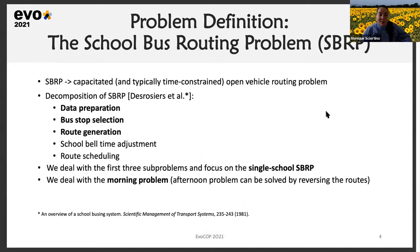Moving on to the problem definition: the school bus routing problem is most of the time modeled as a capacitated and typically time-constrained open vehicle routing problem — open because it starts from a bus depot and ends at the school or vice versa. Zaro-Rosetal in 1981 provided the decomposition of the school bus routing problem, which involves five sub-problems: the data preparation phase, the bus stop selection phase, route generation, school bell-time adjustment, and route scheduling.